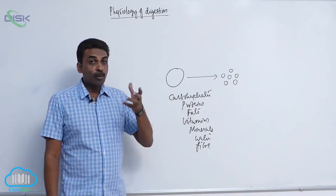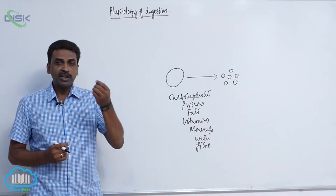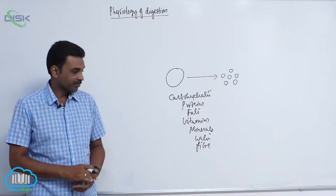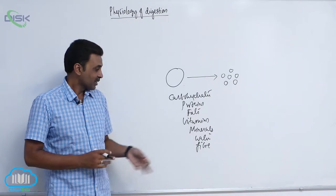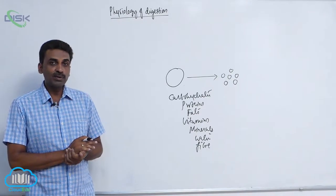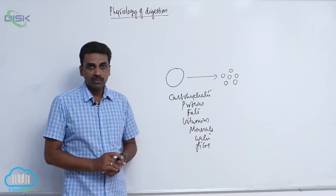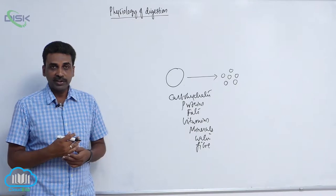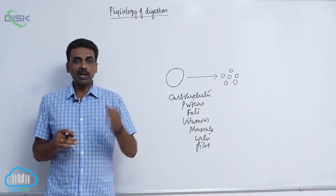These three — carbohydrates, proteins, and fats — are in complex form. Vitamins are organic substances required in very small quantities but have vital functions in the body. Some vitamins are water soluble — B complex and vitamin C — and some are fat soluble — vitamins A, D, E, and K. Minerals required in larger quantity are macrominerals; those required in small quantity are microminerals. Each mineral has multiple functions in our body.